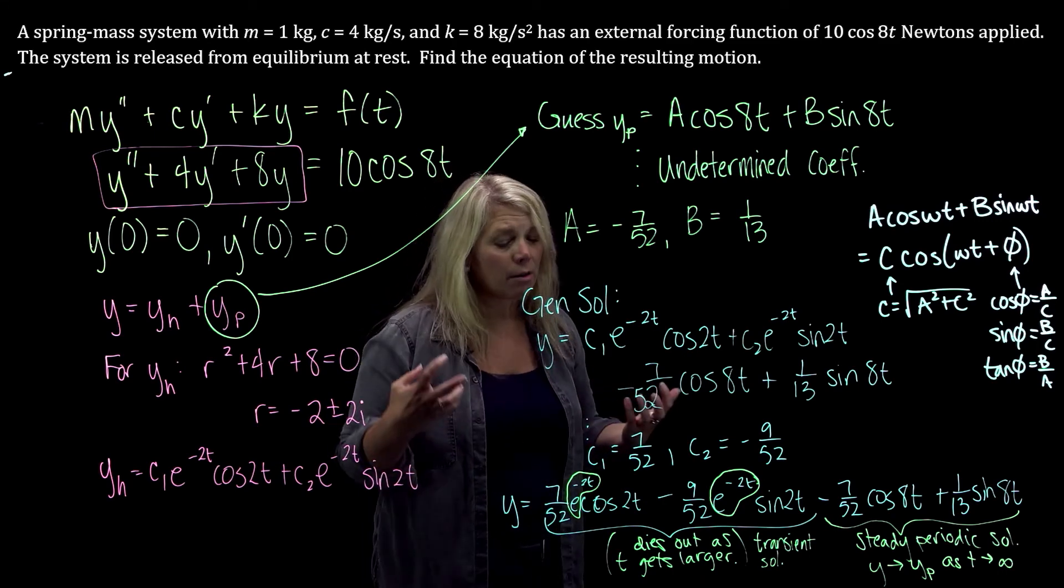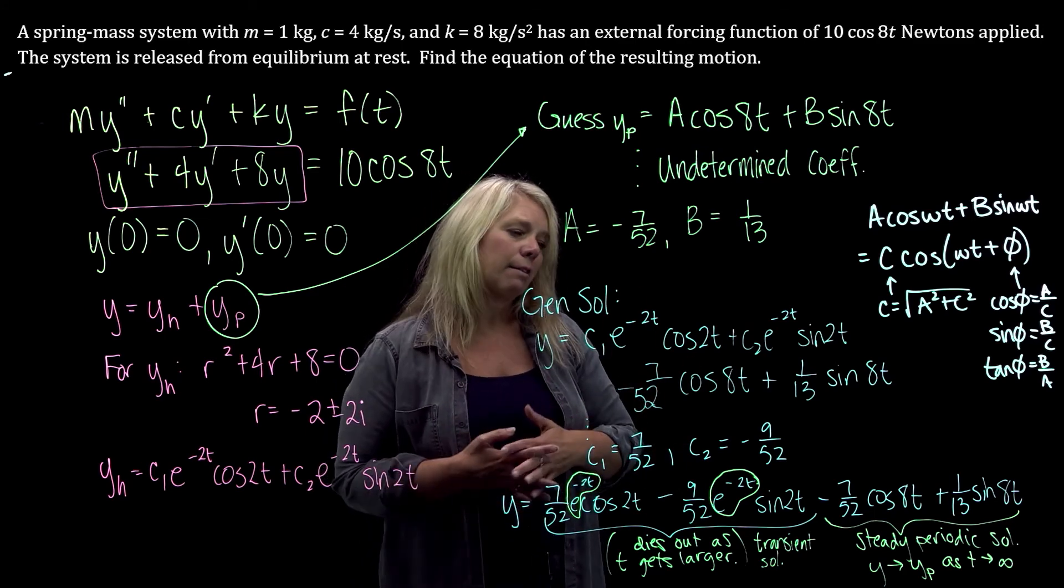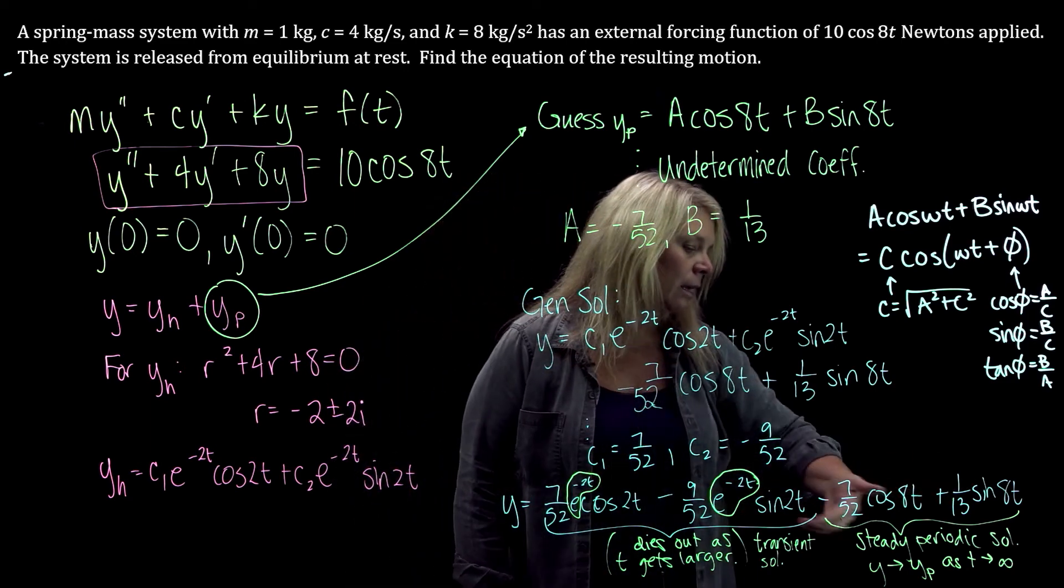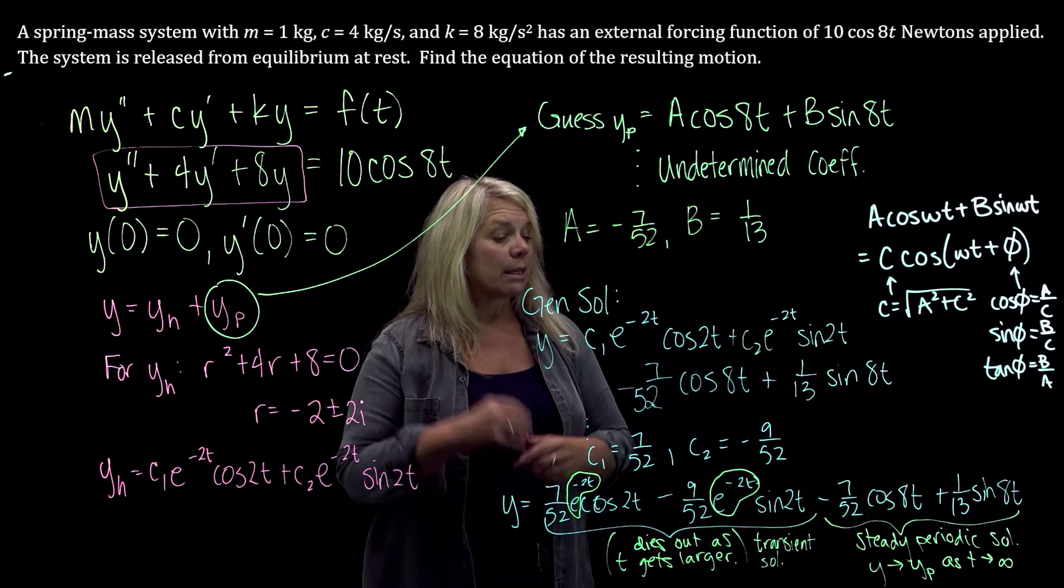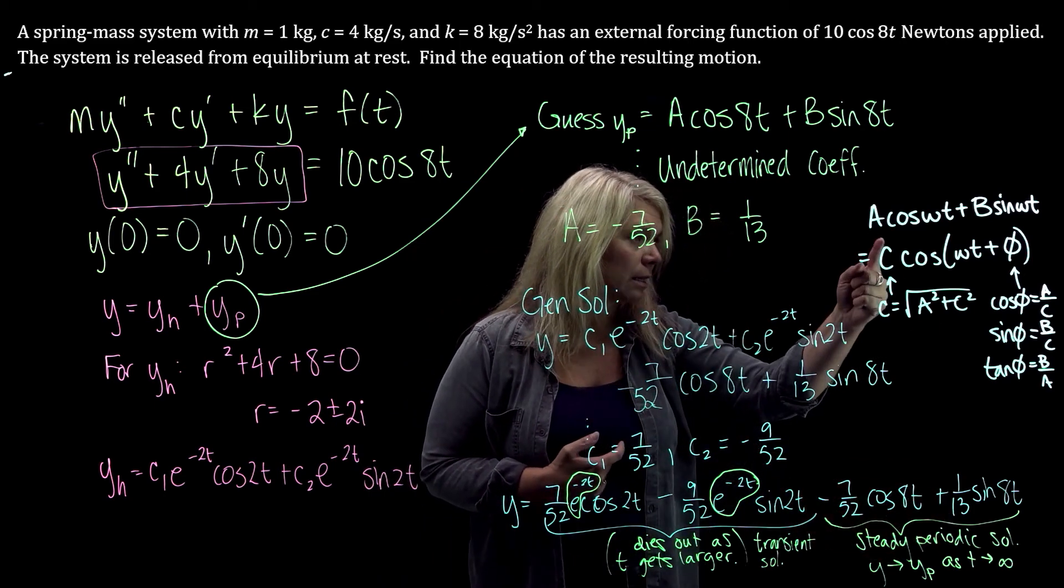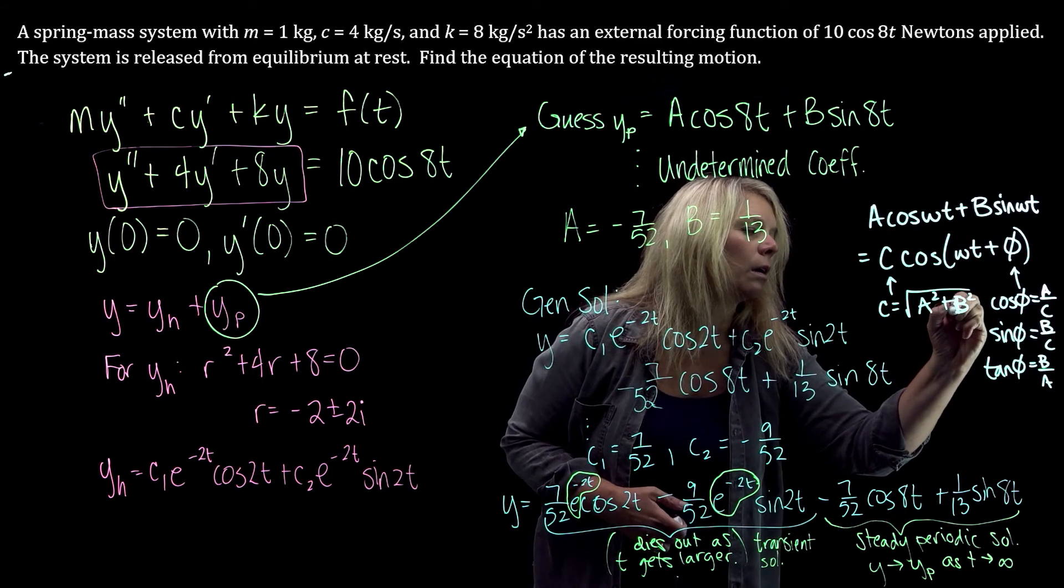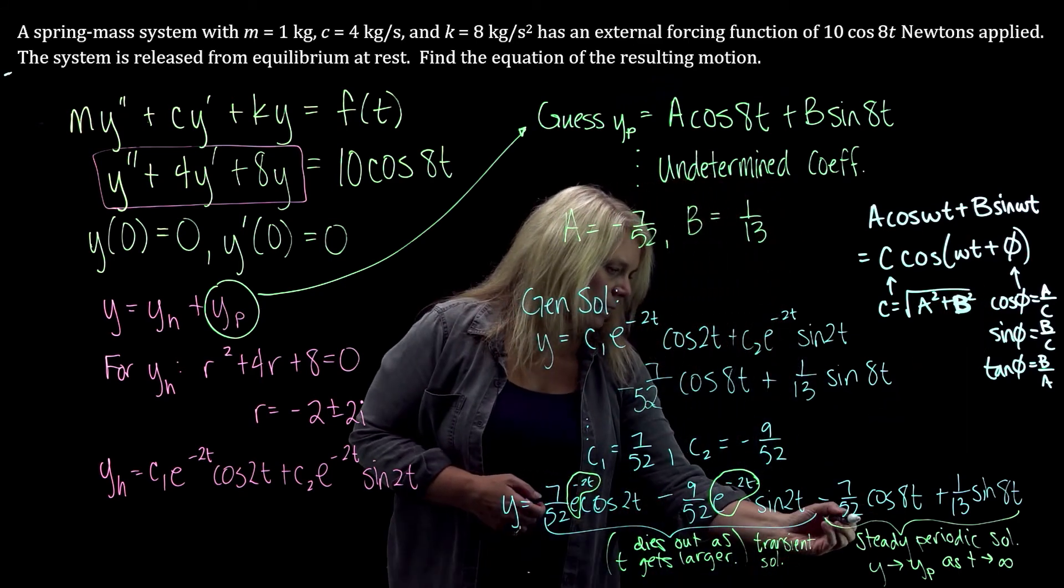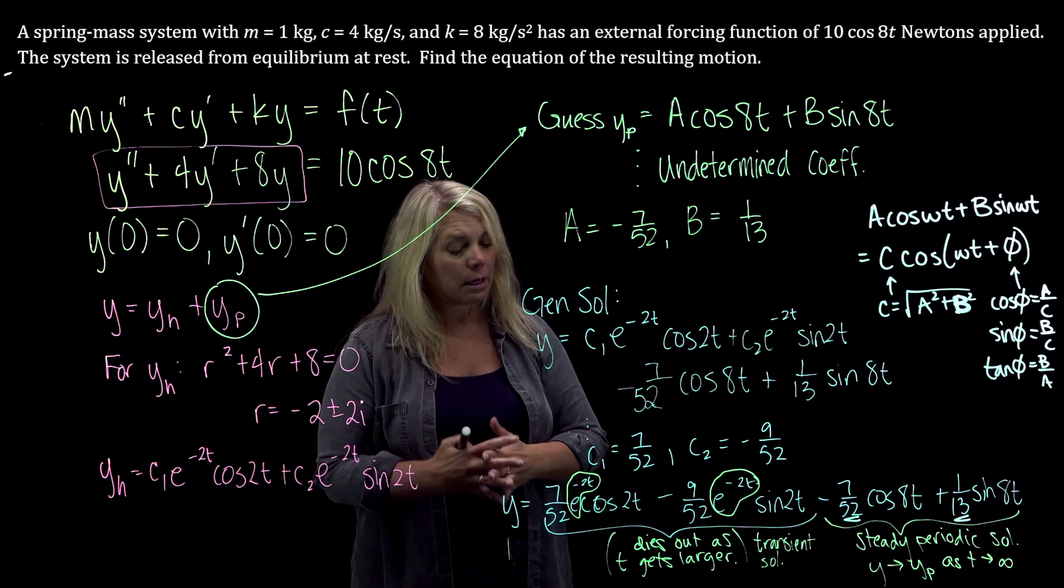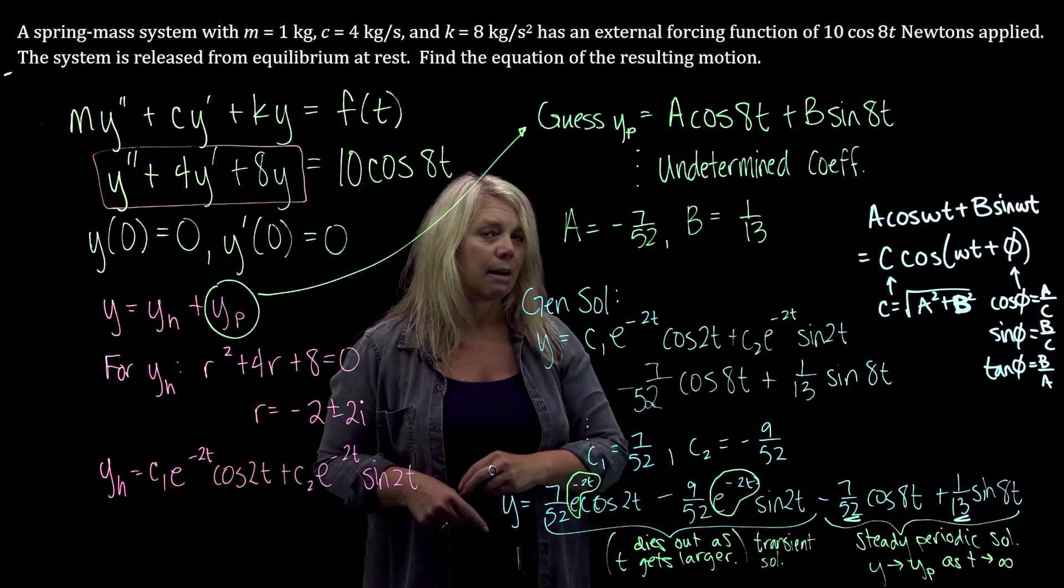The more important thing to me than turning through all those calculations is that you understand what this solution represents, what the different parts of it mean in terms of the motion of the object, right? Eventually this object is going to be oscillating with a period of 2 pi over 8 or a frequency of 8 over 2 pi. And then you can think about the amplitude of those oscillations by using this formula here, where c is square root of a squared plus b squared. Where this would be your a and your b. And so you could think about the amplitude of those eventual oscillations when t is small and close to 0. This part is also going to have an impact on the solution. But as t gets a little bit larger, this part dies out.